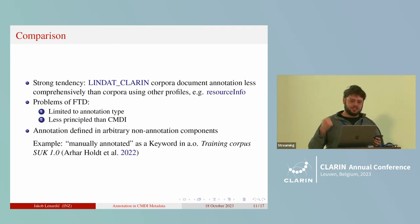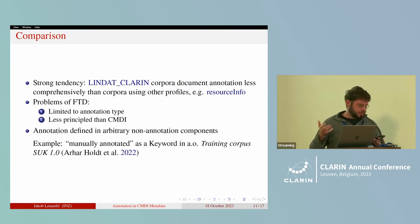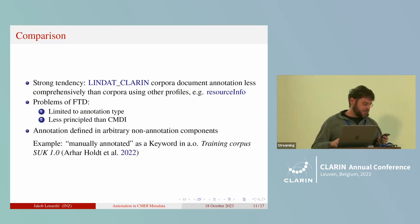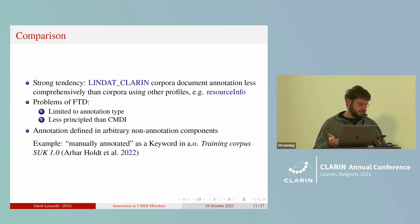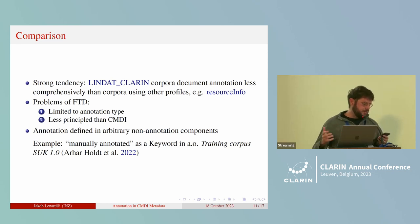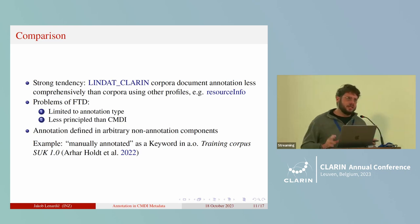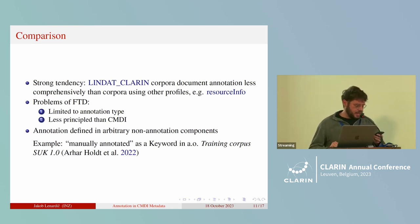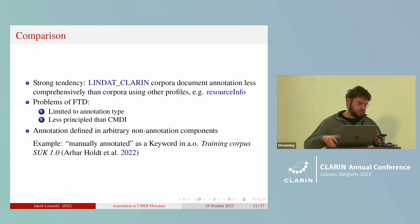There's a strong tendency that corpora using the Lindat-CLARIN profile document annotation less comprehensively than corpora using other profiles. Two problems arise from using free text description for such documentation. First, whenever annotation is documented this way, usually only the annotation type is mentioned, and rarely any other subcomponents like the tool or tag set. Second, since free text is unstructured, the types of information presented are often arbitrary — what's described seems left to the whims of the depositor. Also, many corpora define aspects of annotation as part of arbitrary components unrelated to annotation, for example listing annotation mode like 'manually annotated' only as a keyword.